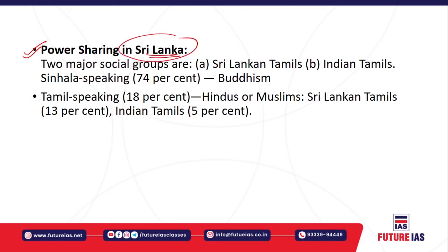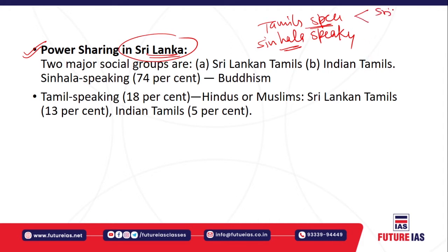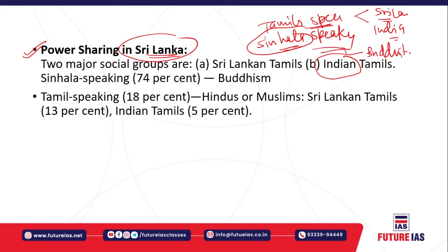Let us take the case study of power sharing in Sri Lanka. First, let us understand the demography of Sri Lanka. There are two main groups: Tamils and Sinhalese. The Tamil-speaking people are of two types: Sri Lankan Tamils who are native to Sri Lanka, and Indian Tamils who have origins from India. The Sinhalese are basically Buddhist. Seventy-four percent of the people in Sri Lanka are Sinhalese-speaking Buddhists.